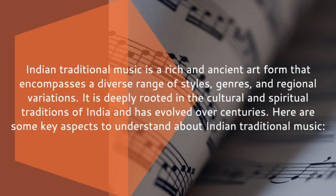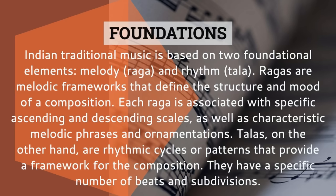Indian traditional music is a rich and ancient art form that encompasses a diverse range of styles, genres and regional variations, deeply rooted in the cultural and spiritual traditions of India. It is based on two foundational elements: melody and rhythm. Ragas are melodic frameworks defining the structure and mood of a composition, each associated with specific ascending and descending scales. Talas are rhythmic cycles or patterns providing a framework for composition, with a specific number of beats and subdivisions.